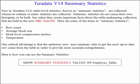One critical advantage is that the optimizer now uses summary stats to get the most up-to-date row count from a table in order to provide more accurate extrapolations. Here is how you can see the summary statistics — for example, Show Summary Statistics values on the employee table.